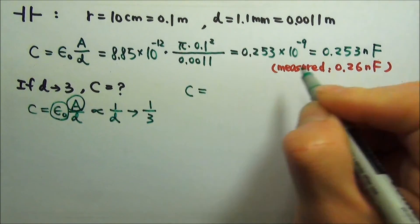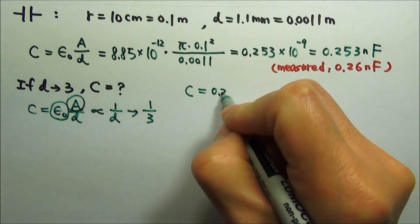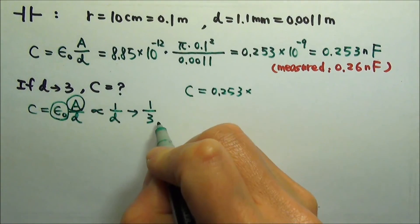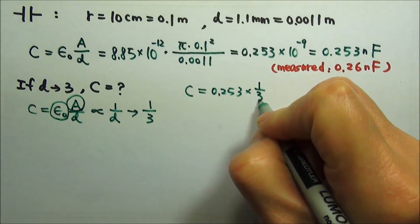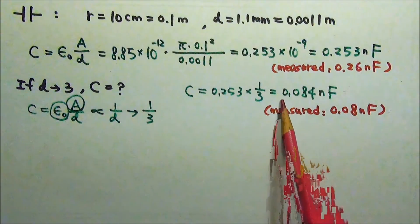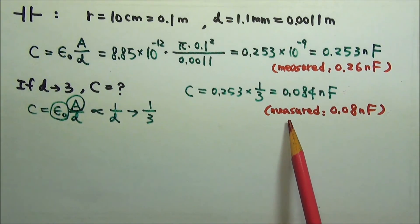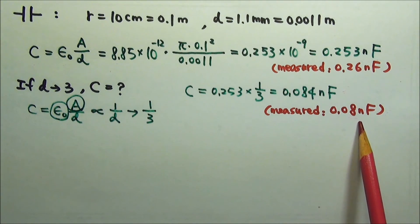So the new capacitance would be the old value, 0.253, times the factor by which it changes. It equals 0.084 nanofarad. Our multimeter reading is 0.08 nanofarad, and it can only read up to this digit.